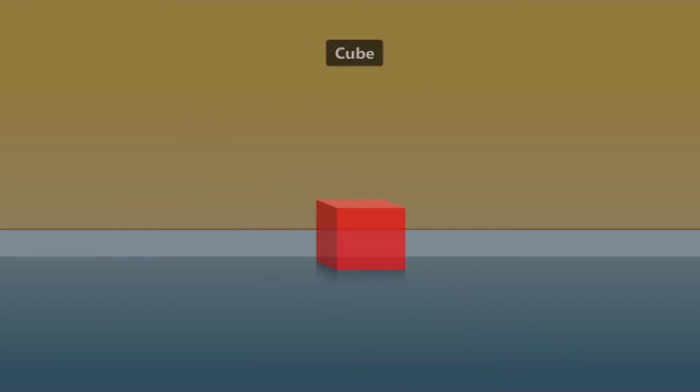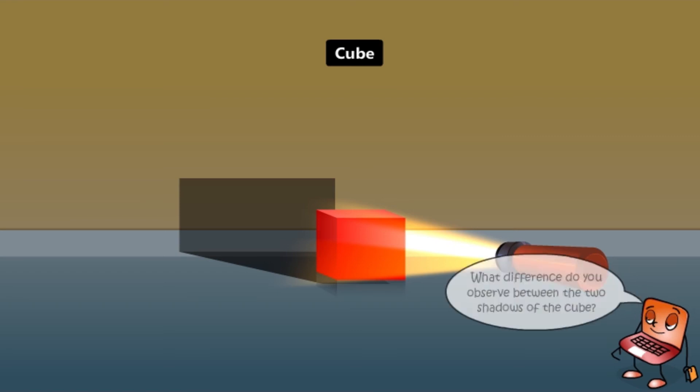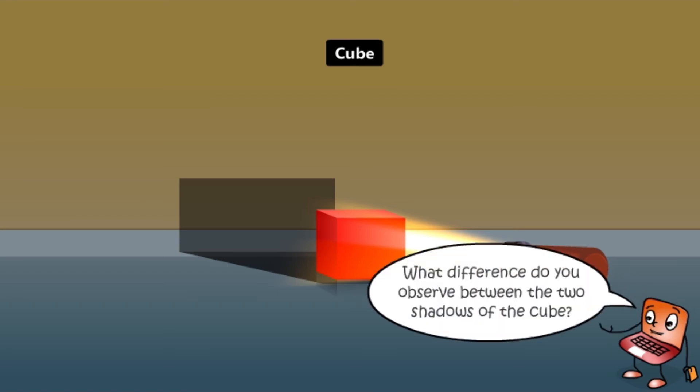Now place a cube and observe the shadow when light from a torch falls on it head on. Now move the torch slightly above and observe the shadow formed. What difference do you observe between the two shadows of the cube?